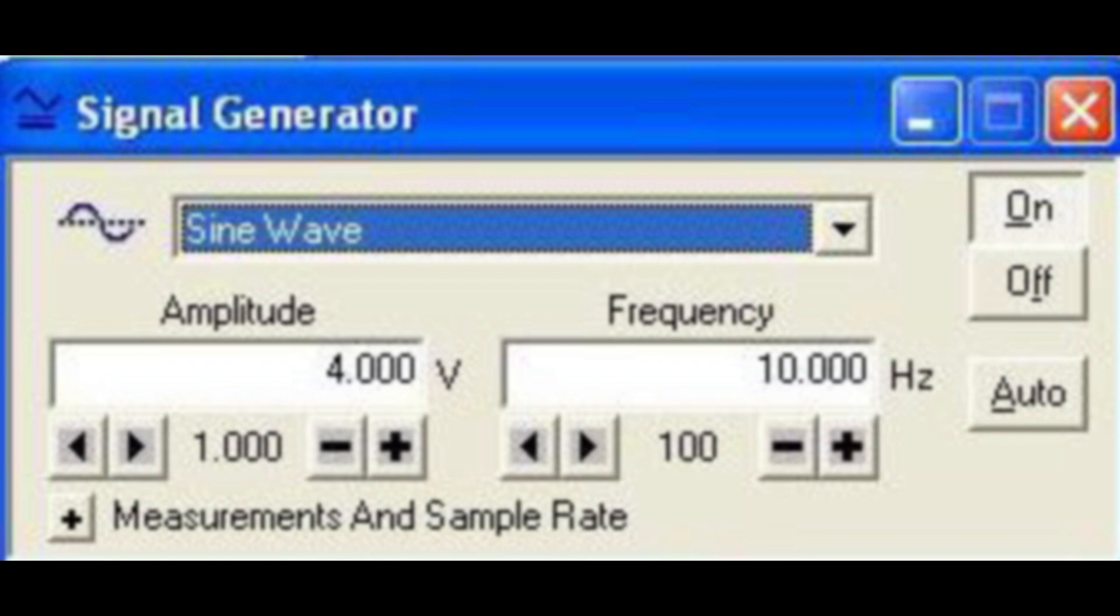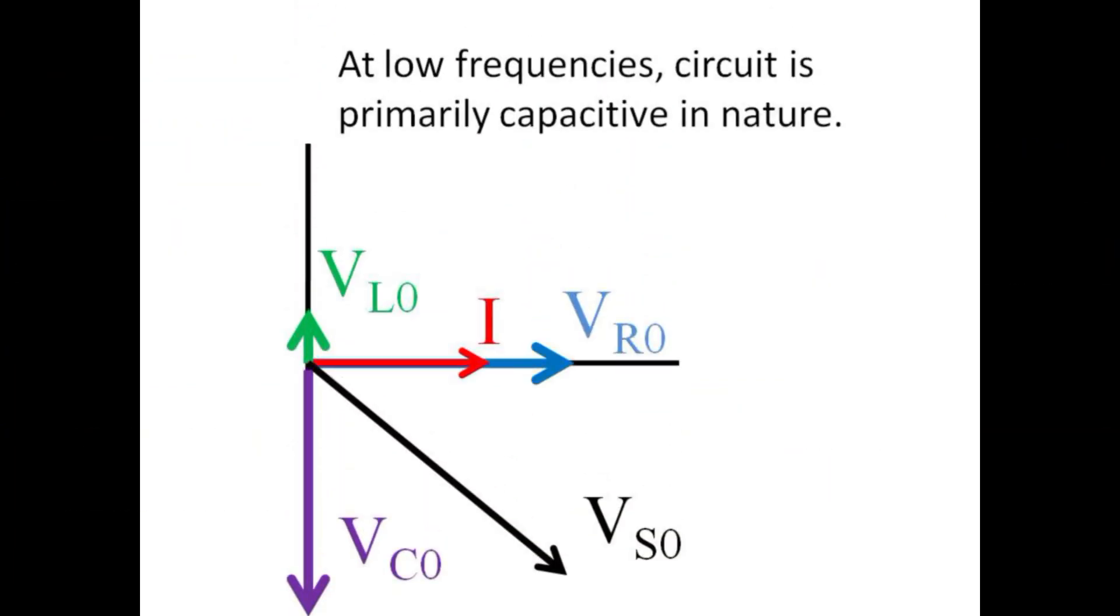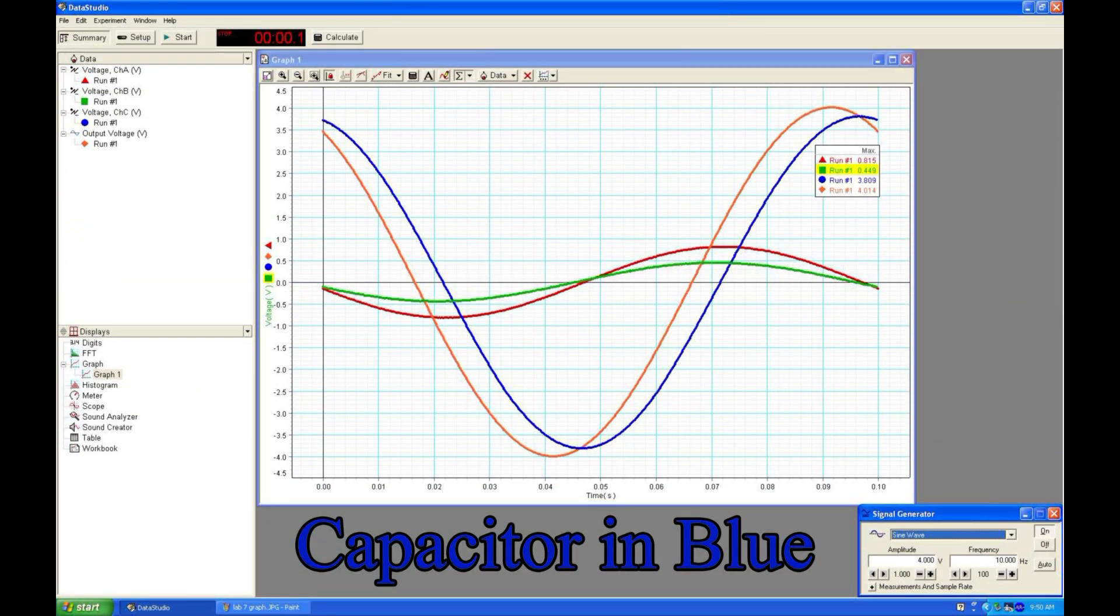The AC source voltage is set to 4 volt amplitude, and the frequency is varied from 10 to 1,000 hertz. At low frequencies, the capacitor has a large reactance, and we expect the voltage drop across the capacitor to dominate the circuit. At only 10 hertz, note how much larger the blue capacitor voltage is compared with the resistor and inductor. The capacitor voltage is nearly identical to the source voltage. We note the peak values of each circuit element for every frequency.